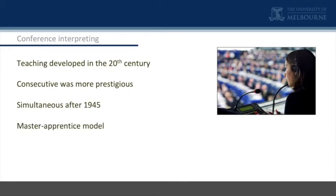The basic model of training developed differently in different countries, but in the West the most influential model is the one developed by Danika Seleskovich in Paris at the ESIT, called the Paris School. It has been very much a master-apprentice type model, where the person teaching is the master at this art. It is taught as an art where some basic principles are given — especially in Seleskovich, who had the capacity to formulate very easily understood pedagogical principles — and then the rest was practice in the presence of the master.